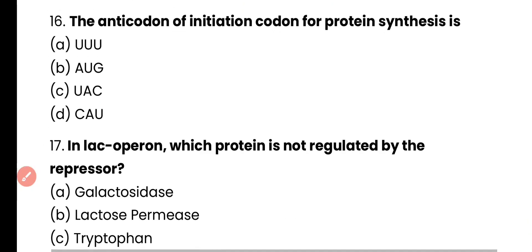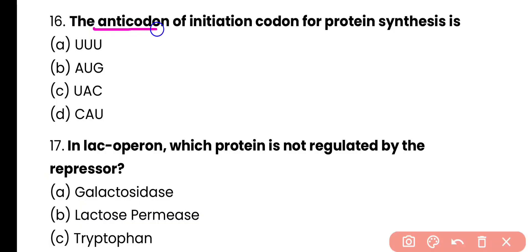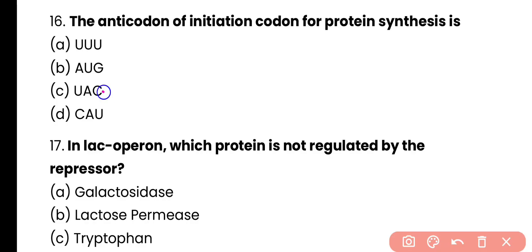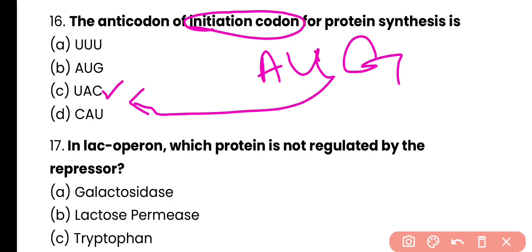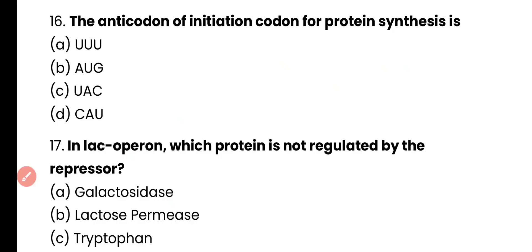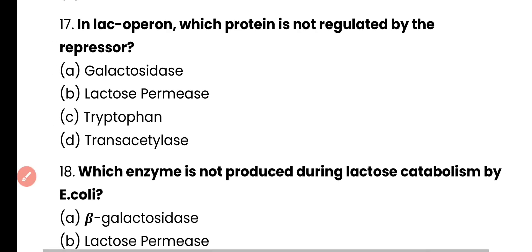Question number 16. The anticodon of the initiation codon for protein synthesis is triple-U, AUG, UAC, or CAU? Correct answer is option C. The initiation codon is AUG and the anticodon of AUG is UAC. So correct answer is option C.